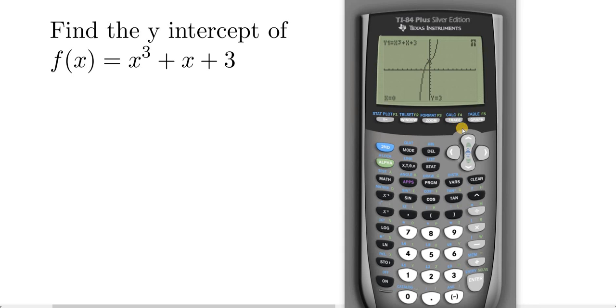Again, second, trace. Just hit enter on value. And you can enter any value you want. In this particular case, we just want zero because we want the y-intercept. So zero, and then enter, and then there it is.